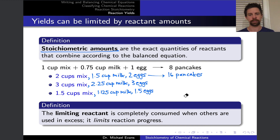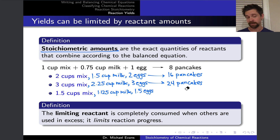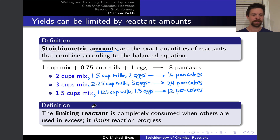The stoichiometric amount of product also scales: with two cups of mix and enough other ingredients, we can make 16 pancakes. With three cups of mix and all required ingredients, we can make 24 pancakes. With 1.5 cups of mix, the stoichiometric amount of product we should expect is 12 pancakes. These stoichiometric amounts are the exact amounts that combine according to the balanced chemical equation.